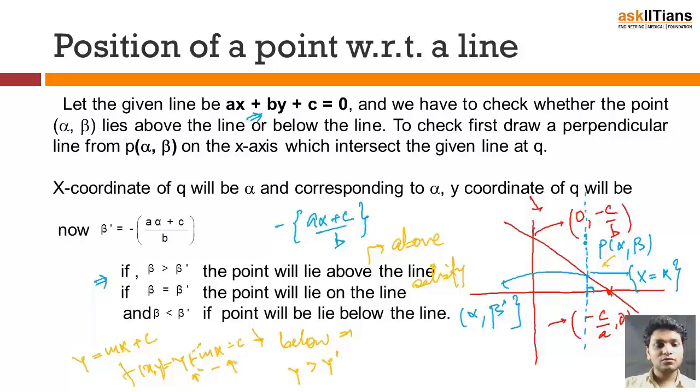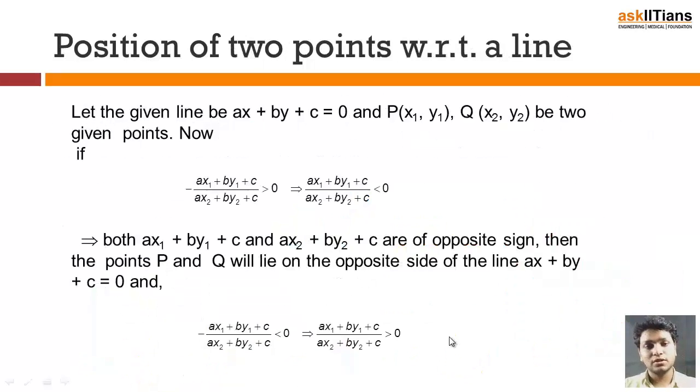This will give you the y point and this is suppose the y dash. If it is greater than 0, you will get a point which is above the line, and if it is less than 0, you will get a point which is below the line. So we will use this concept to determine the position of two points with respect to a line.